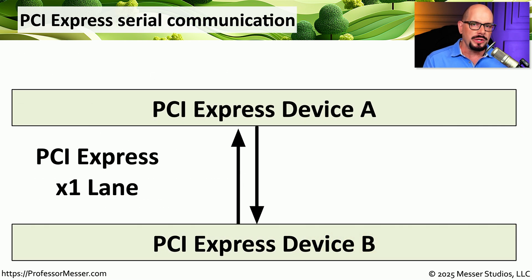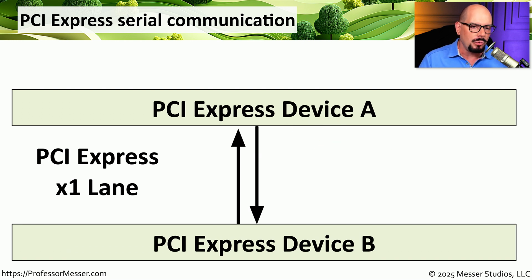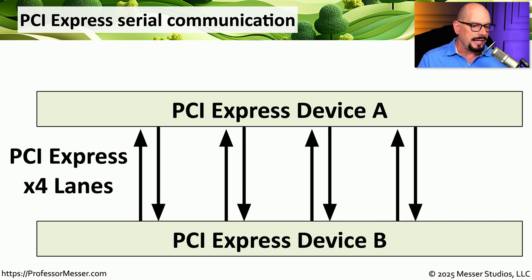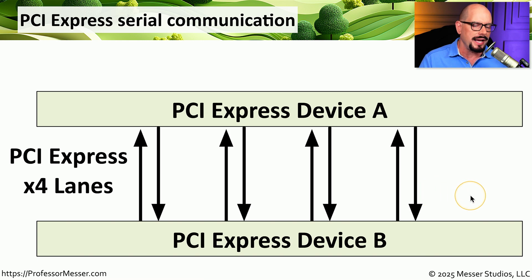Since the pathways used to communicate for PCI Express are serial, we don't have to have those wide 32-bit or 64-bit pathways. We can simply have one pathway going one direction and one pathway going the other direction. This would be referred to as a PCI Express by-1 lane. That means if you wanted PCI Express by-4 lanes, you would have four of those, and you would effectively be quadrupling the amount of throughput compared to a PCIe by-1.